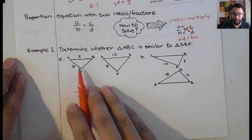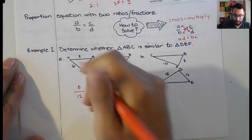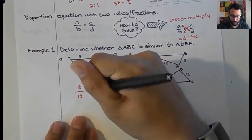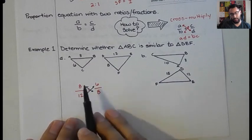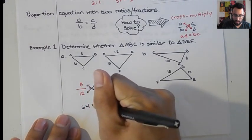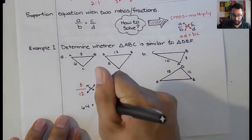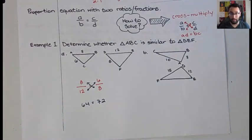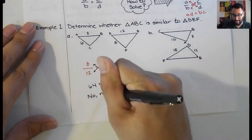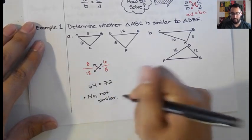For AC, that's 6 units, corresponding with DF which is 8 units, giving us 6 over 8. Now cross multiply: 8 times 8 is 64, equal to 12 times 6 which is 72. Since 64 does not equal 72, these triangles are not similar. They may look like it, but they are not similar to each other.